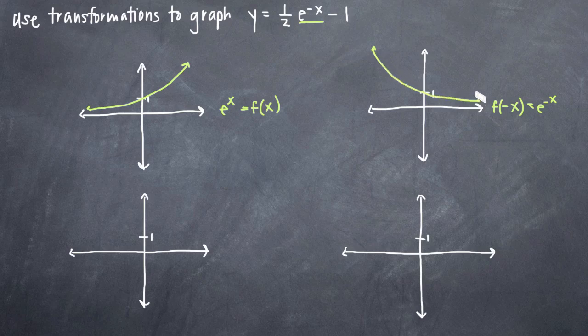So again, we'll intersect the y-axis at y equals 1 and the graph is just flipped across the y-axis like this. So now we have the graph of e to the negative x.